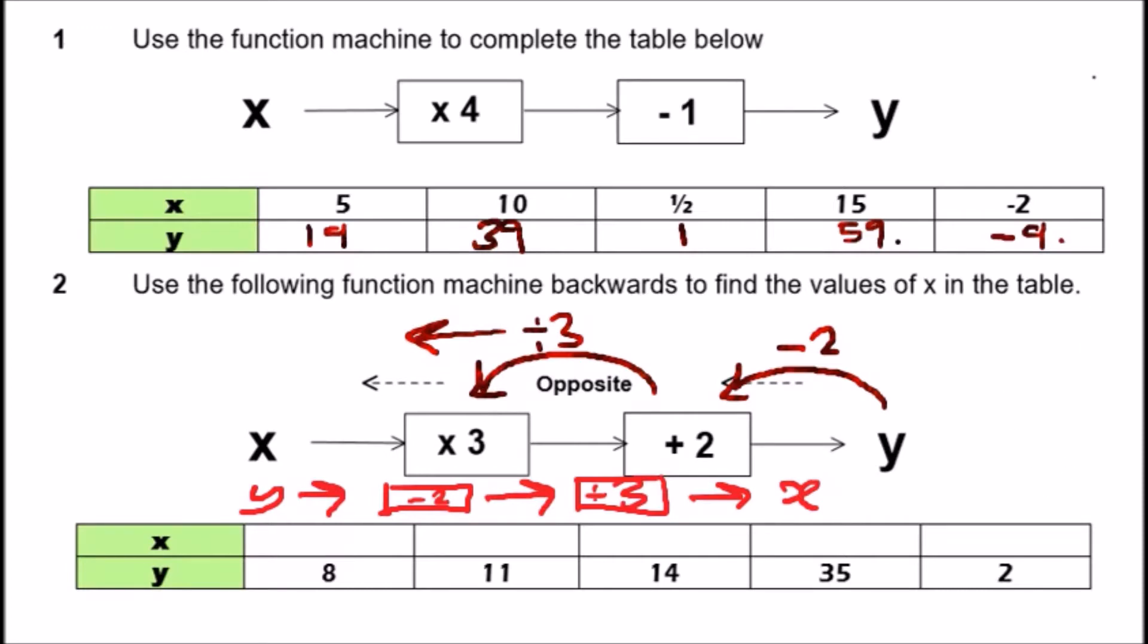From y, let's put 8 first. From 8 we're going to subtract 2 which is 6, and then 6 divided by 3 will give us 2. If you put y is 11, you've got 11 minus 2 which is 9, 9 divided by 3 is 3. We just carry this on. 14 take away 2 is 12, 12 divided by 3 is 4.